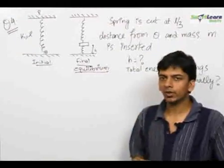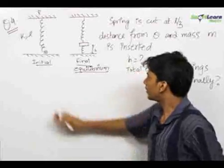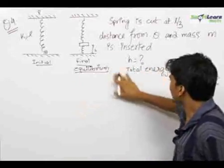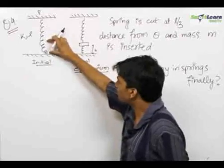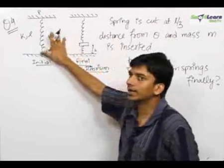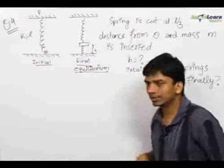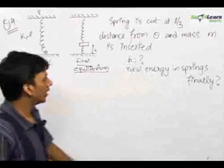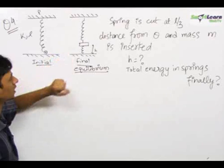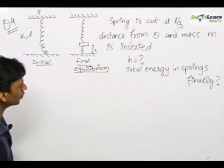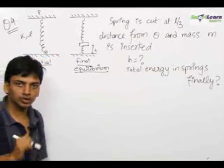This is a slightly difficult question which involves a lot of concepts — you will learn a lot from it. In this question, a spring is cut at distance L/3 from the initial position. Initially the spring is at its natural length. It is cut at distance L/3 and a mass m is inserted. After inserting mass m, it comes down a little and finally stabilizes at the final equilibrium position at a distance h from the ground. You need to find out h and the total energy stored in the springs at this final position.